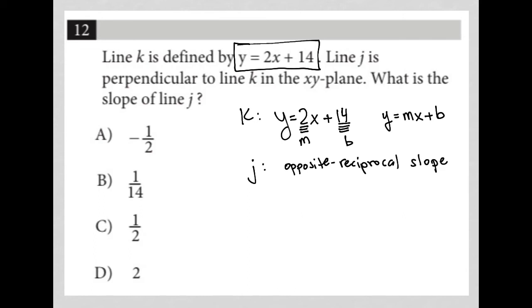The slope of line K is 2. Therefore, the slope of line J would be the opposite, which makes it negative. And reciprocal—2 is the same as 2 over 1, so the reciprocal is 1 over 2.